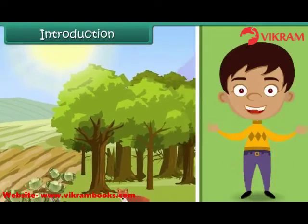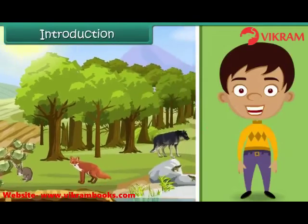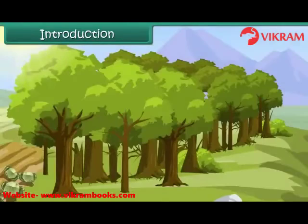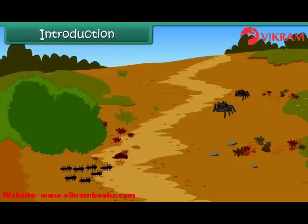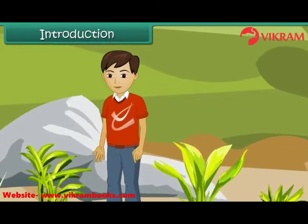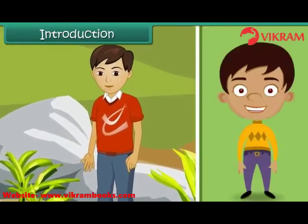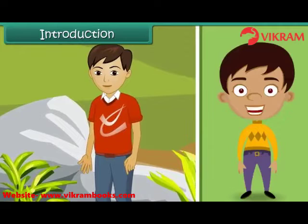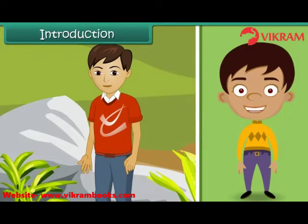Different life forms are present around us — plants, insects, animals, and of course human beings. Every living thing is made up of different body parts and each part has a specific task assigned to it. In this lesson we will look at the parts of a plant body and understand their functions.